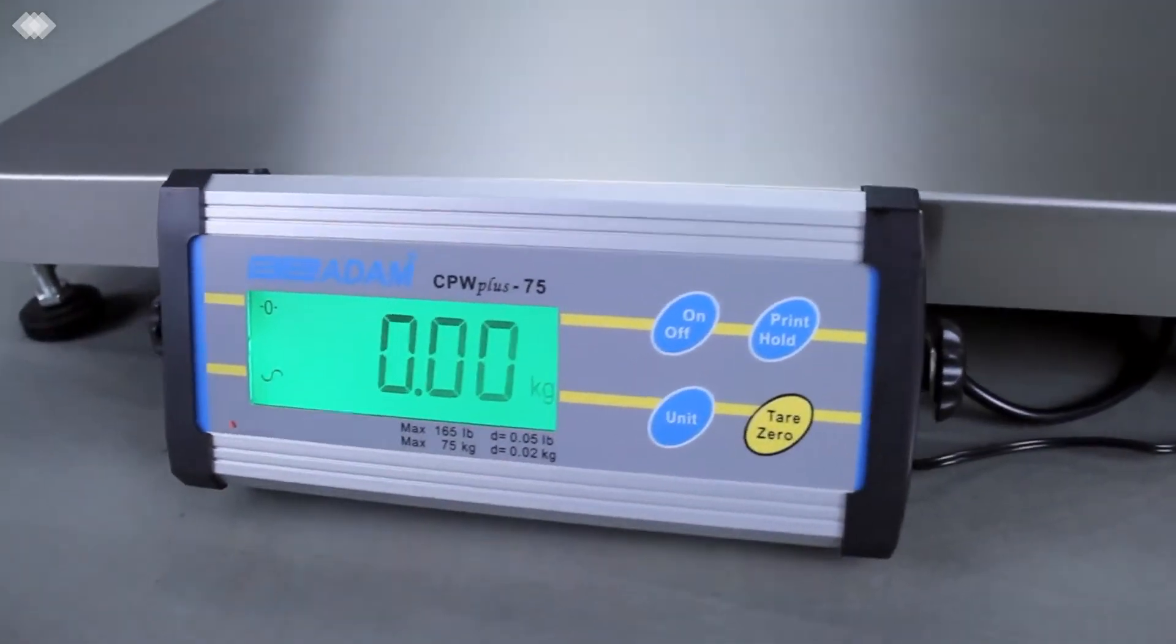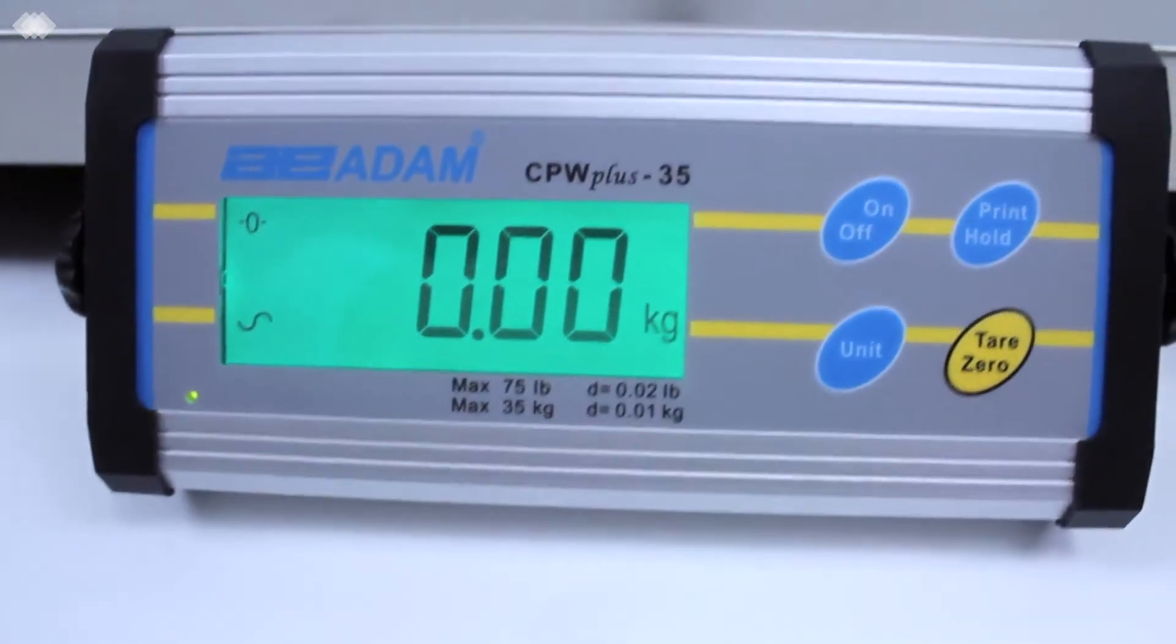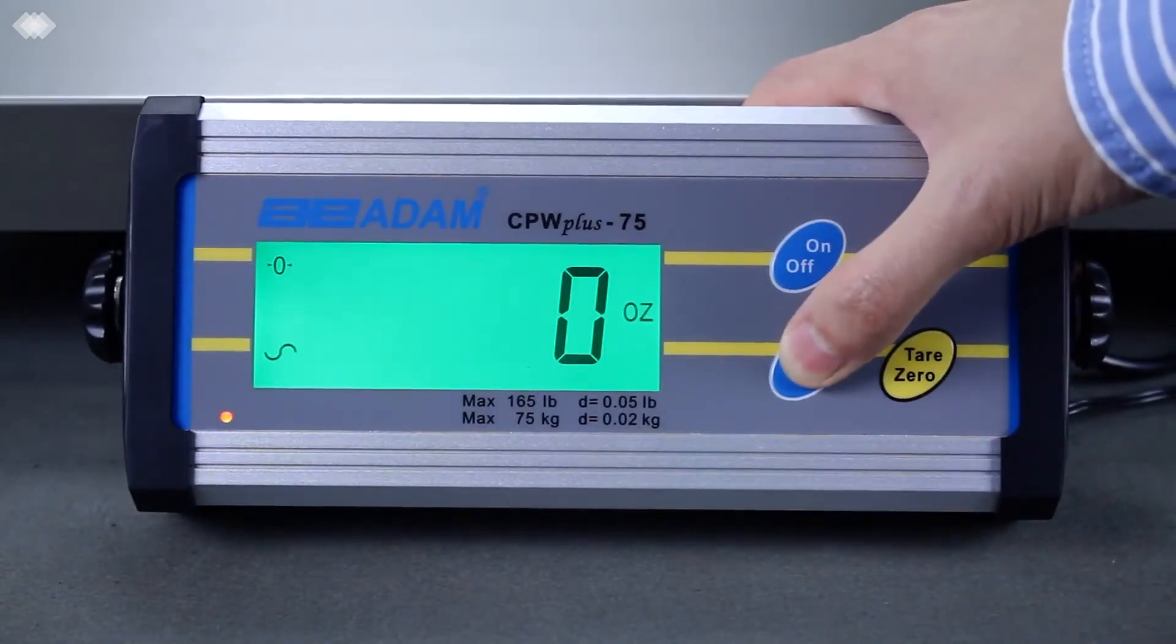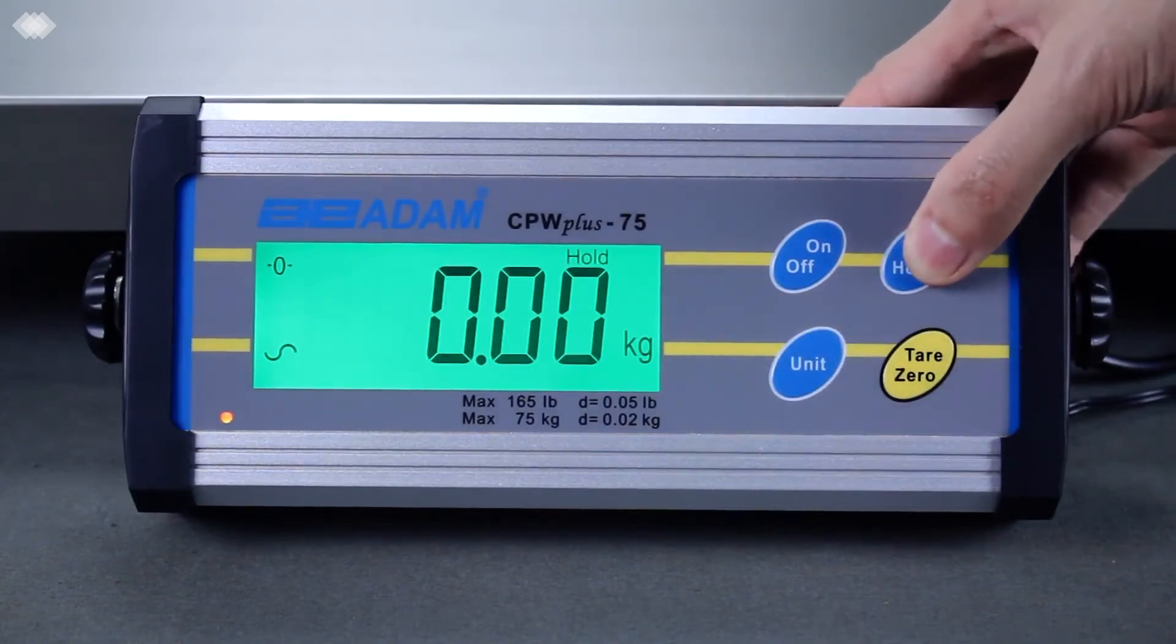At the heart of the scale lies the indicator, housed in sturdy aluminum casing and featuring a four-button keypad. The indicator contains a backlit digital display with large, easy-to-read digits. A standard wall-mounting bracket is included with the indicator.